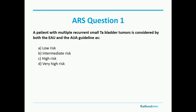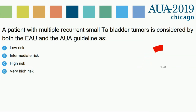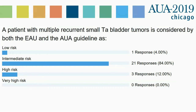First question: A patient with multiple, recurrent, small TA bladder tumors is considered by both the EAU and the AUA risk guideline as low risk, intermediate risk, high risk, or very high risk? Most are voting for intermediate risk — though the number of participants went down to 25. Come on, keep awake — it's early, I know.